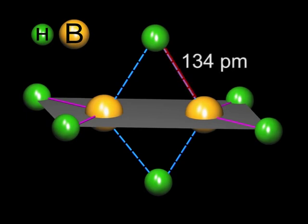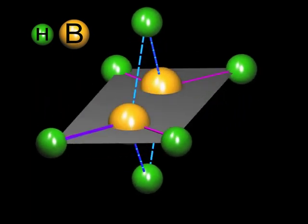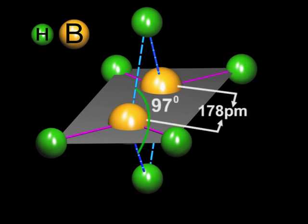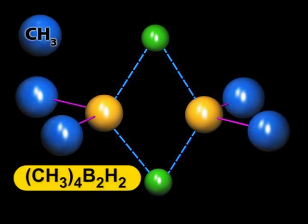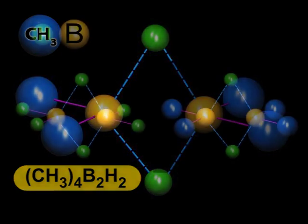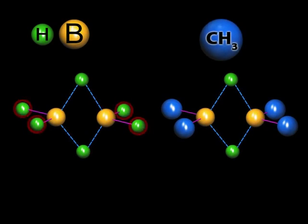The bridged bond is longer, i.e., 134 picometer, than the normal covalent boron hydrogen bond, which is 119 picometer. The methylation of diborane to give tetramethyl diborane also confirms that the four terminal hydrogen atoms are different from the two bridged hydrogen atoms, as the two bridged hydrogen atoms are not methylated.